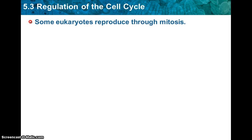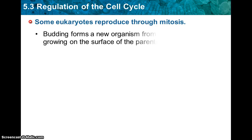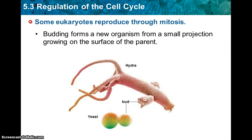Some eukaryotes reproduce through mitosis. Budding forms a new organism from a small projection growing on the surface of a parent. Think of a plant — if you take a piece off and put it in water, it'll grow its own roots and you'll have two plants. That's budding.